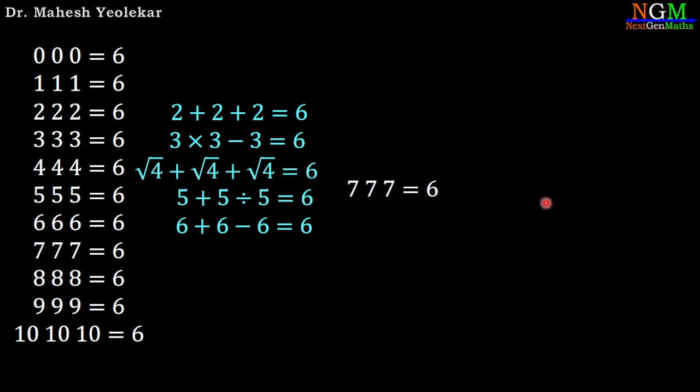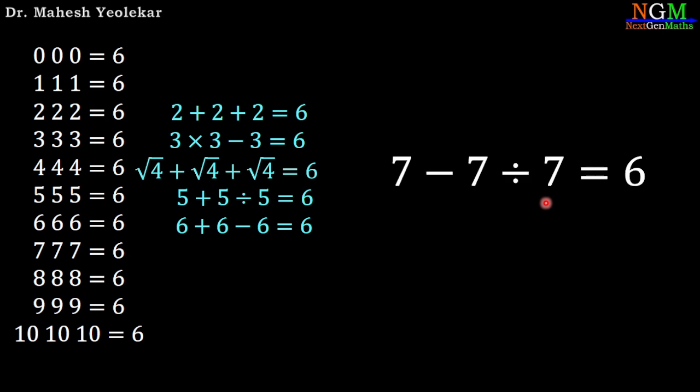Next: 7, 7, 7 equals 6. Apply subtraction and division: 7 minus 7 divided by 7, so 7 minus 1 equals 6.